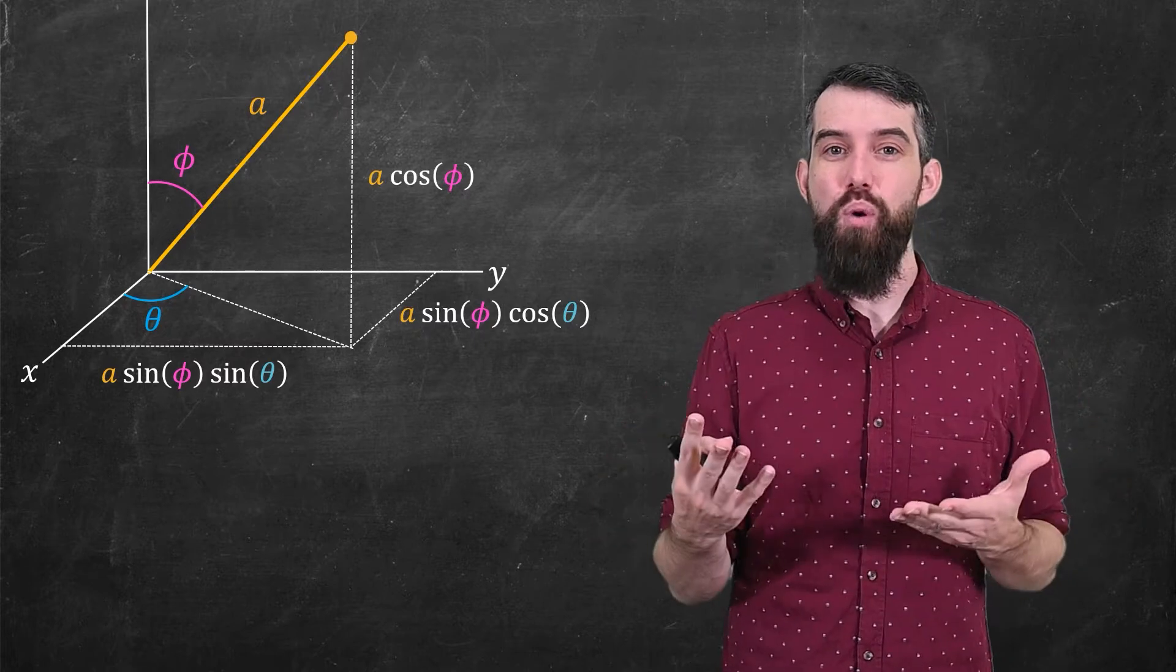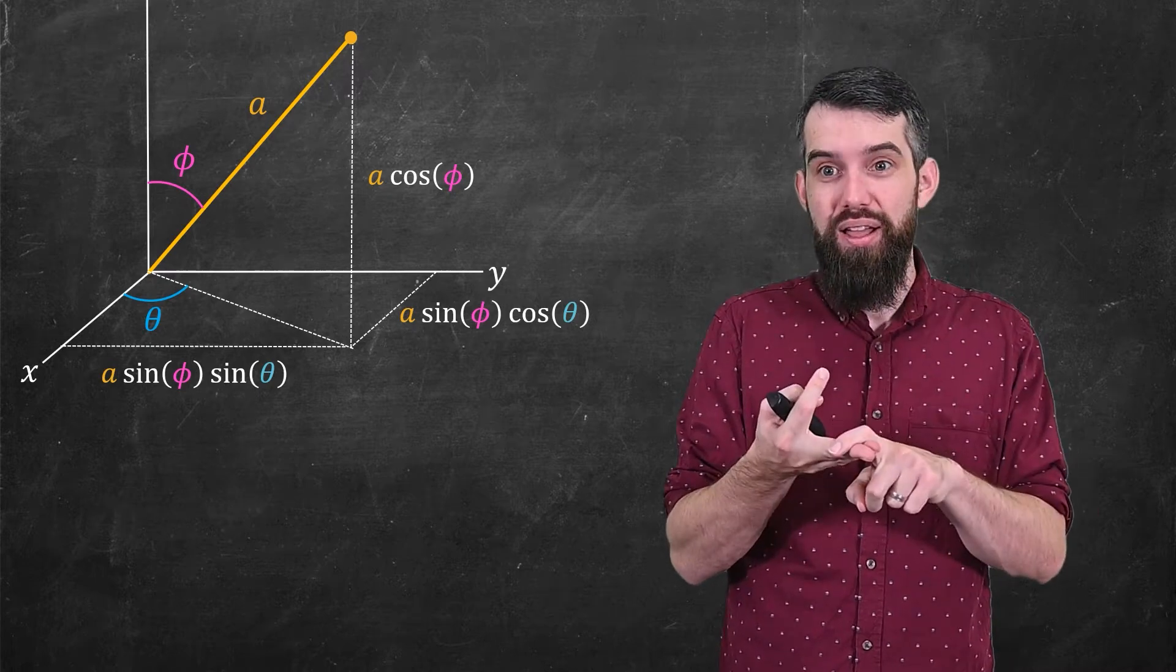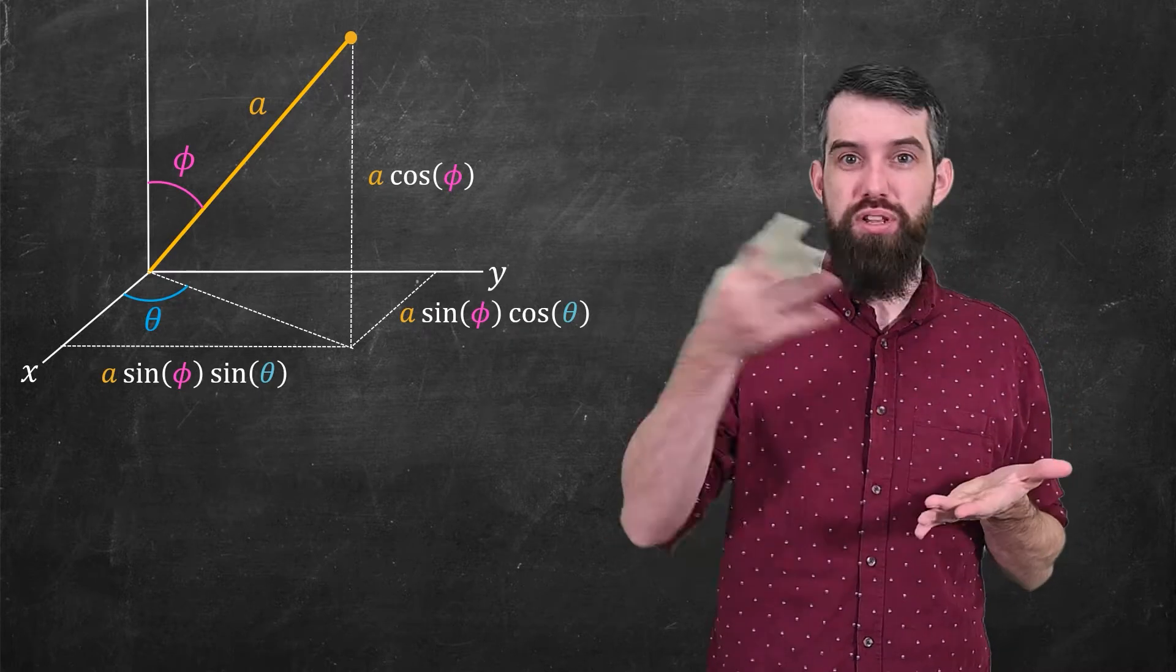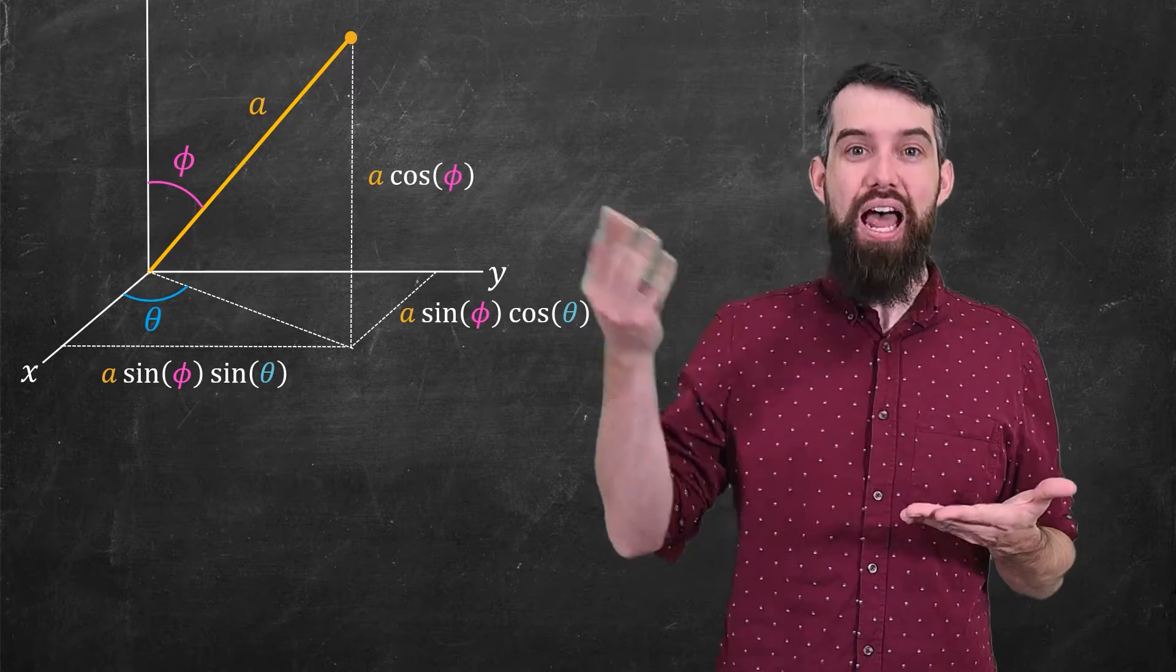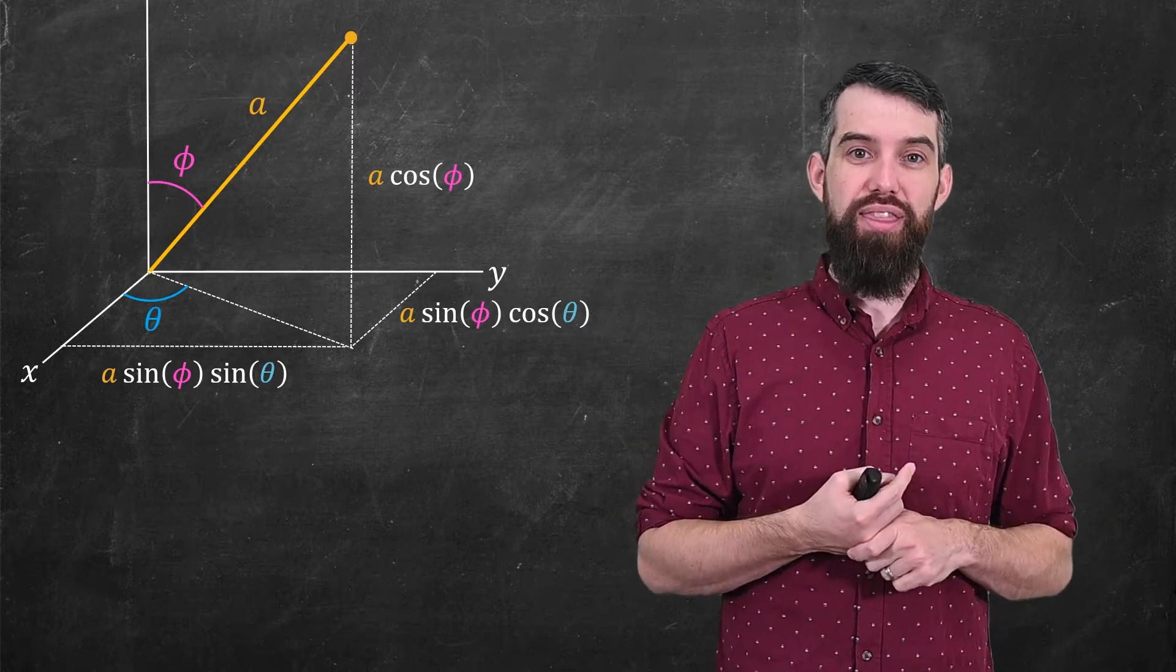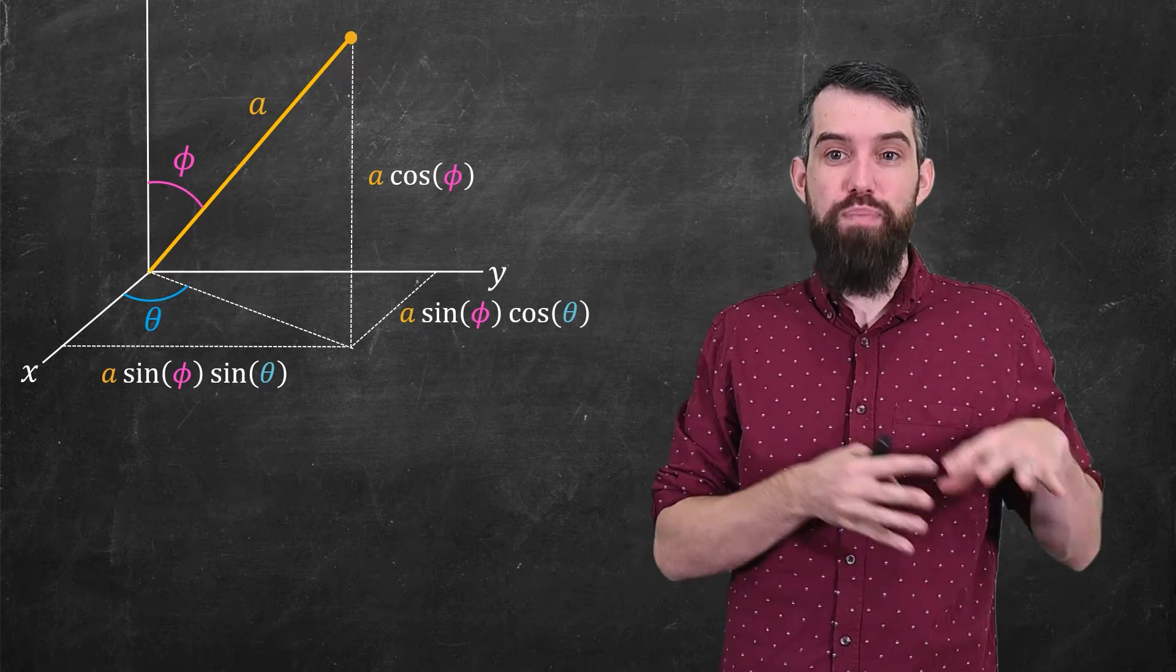The idea is you can describe any points by three different coordinates a, φ, and θ. The a is the length from the origin out to the point. The φ is the angle between that line and the z-axis. The θ is when you project that line down into the xy-plane, it's the angle between that and the positive x-axis.